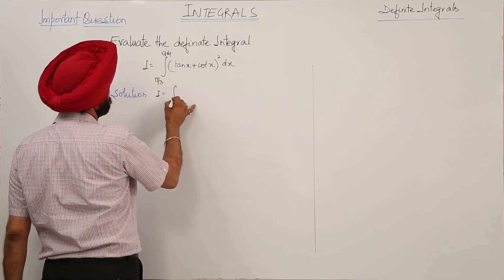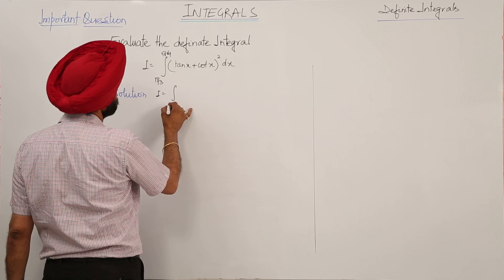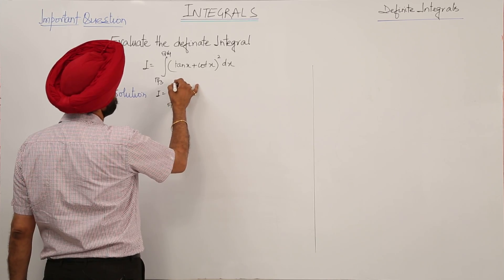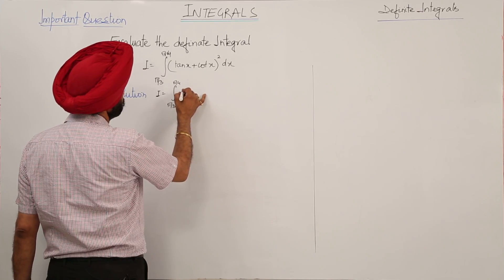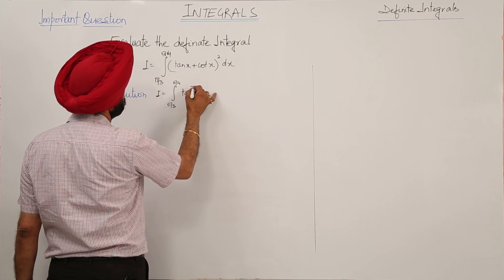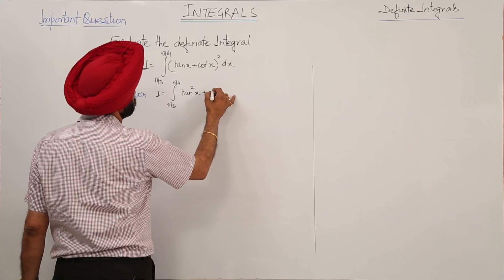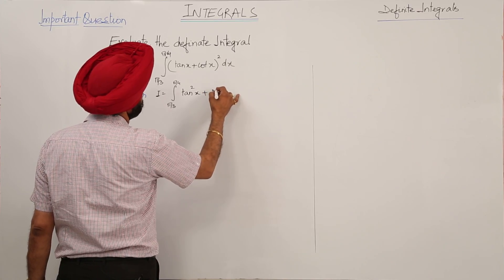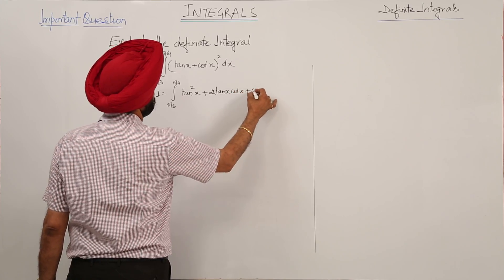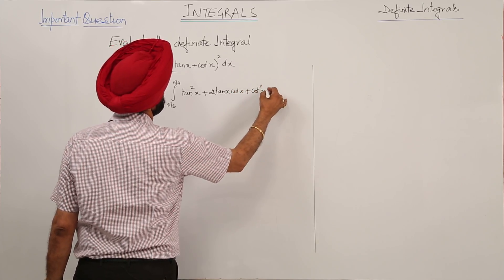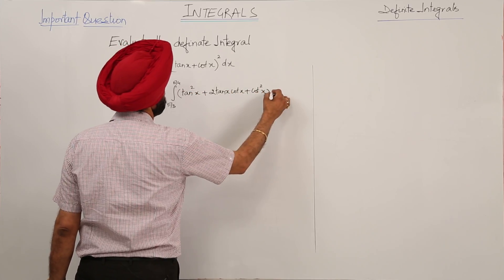We are having a question: tan x plus cot x whole square. Using the identity, we have tan square x plus 2 tan x cot x plus cot square x dx.